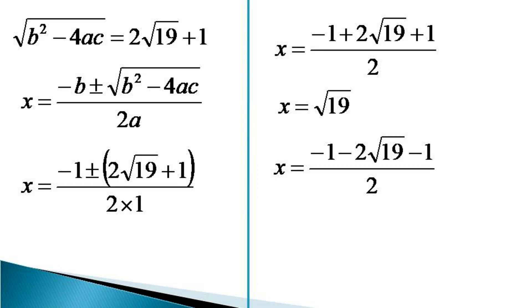And on simplification we get the value of x as equal to -(1 + √19). So these are the two values of the roots of the given equation and both these values satisfy the given equation.